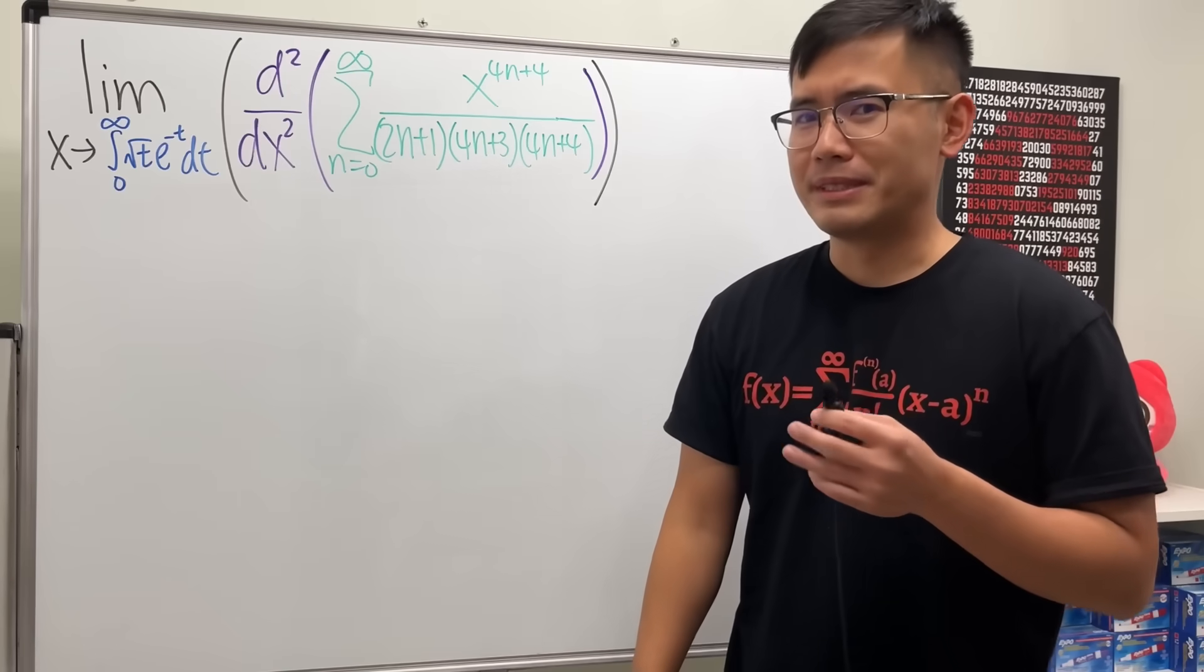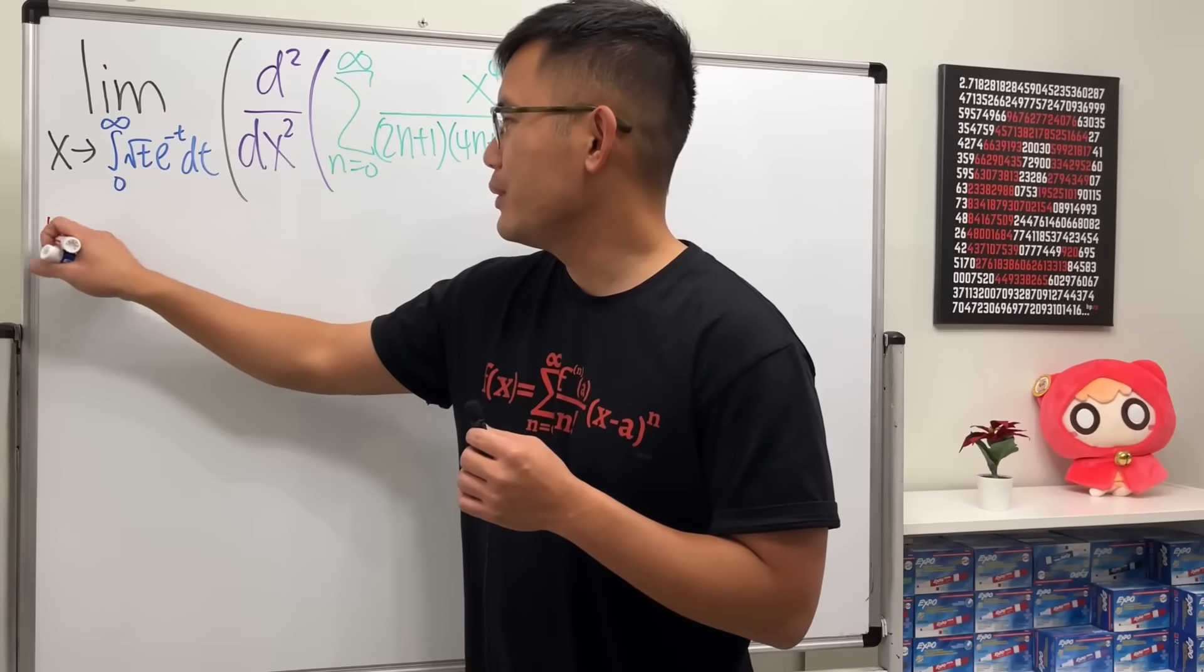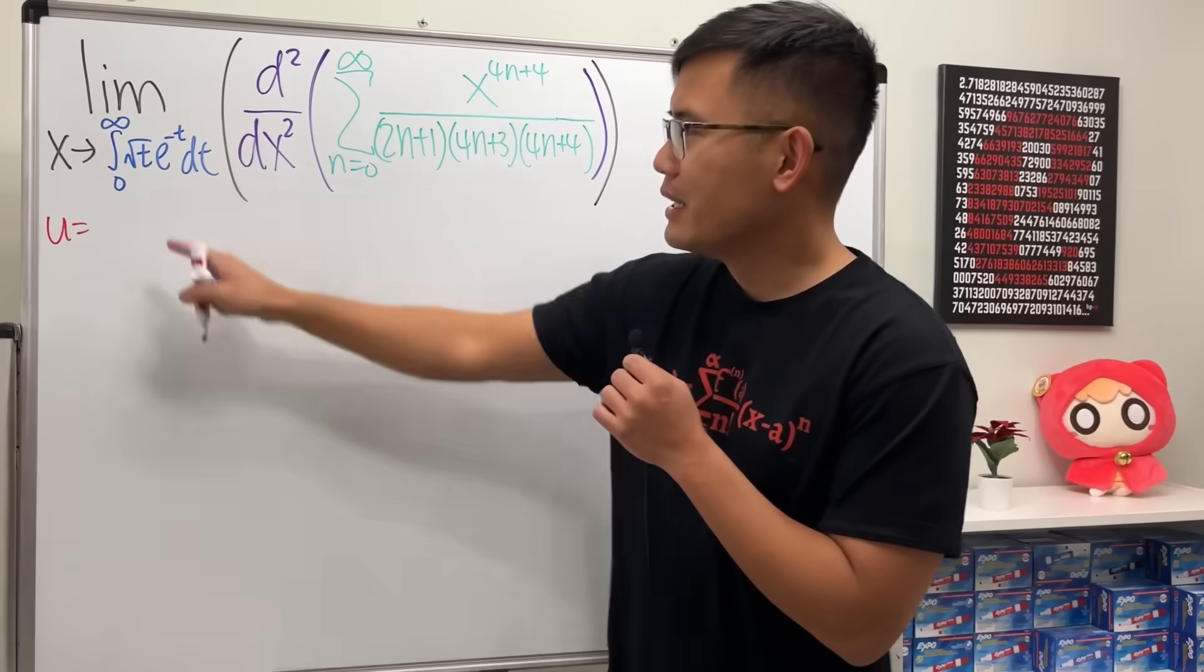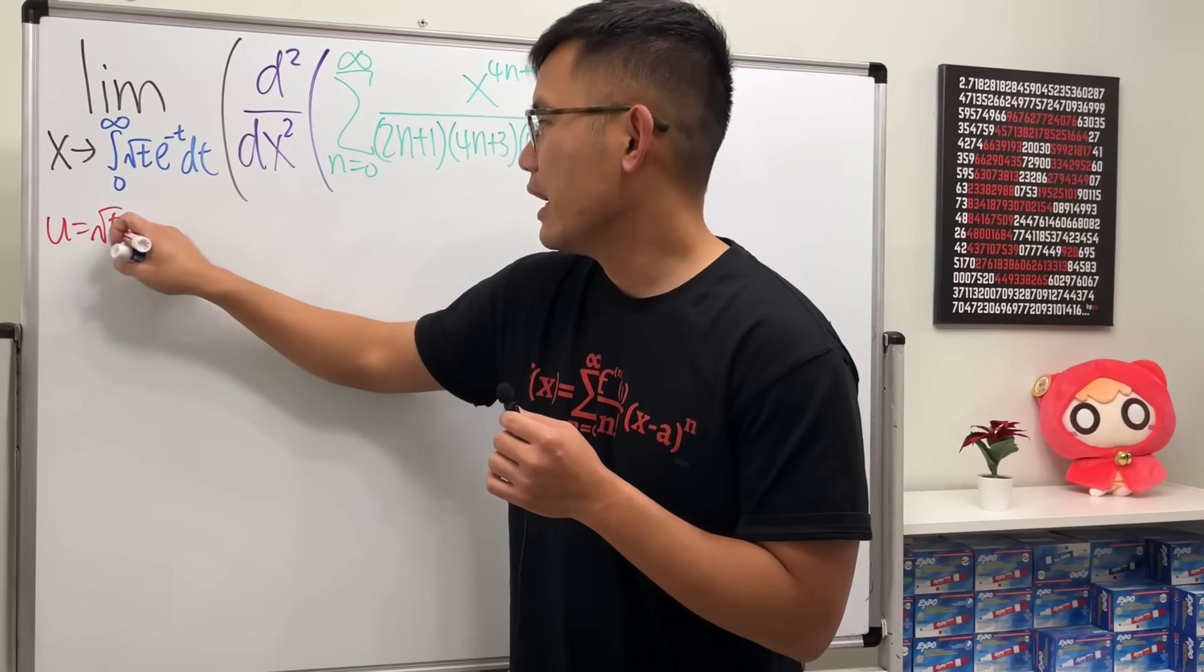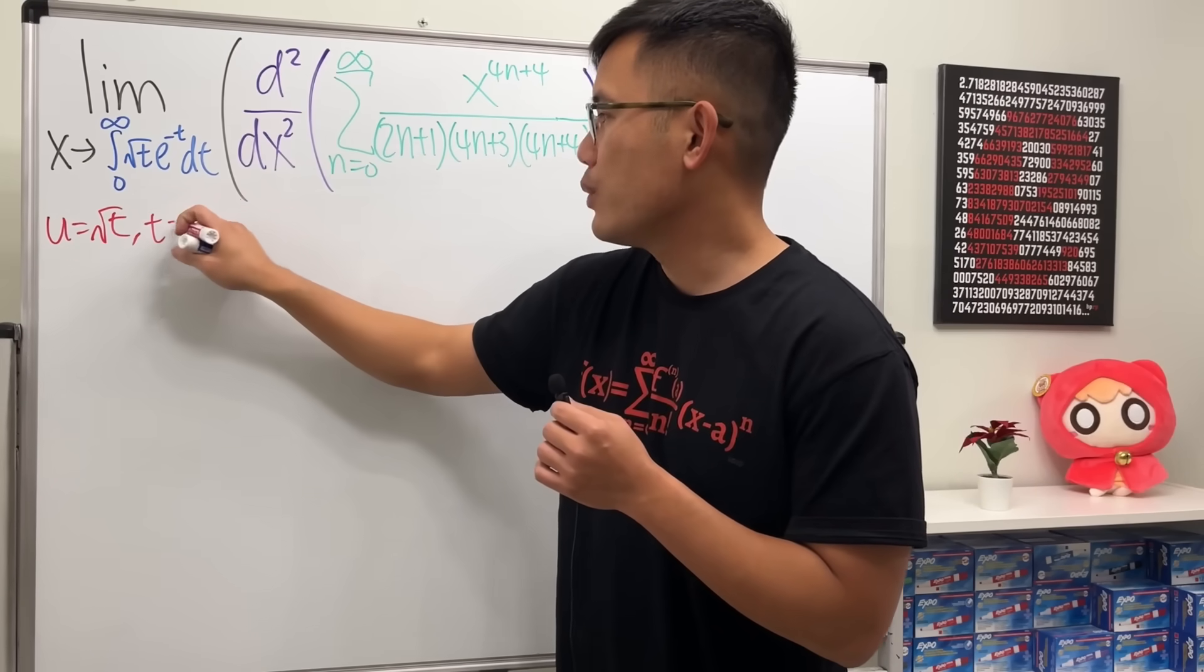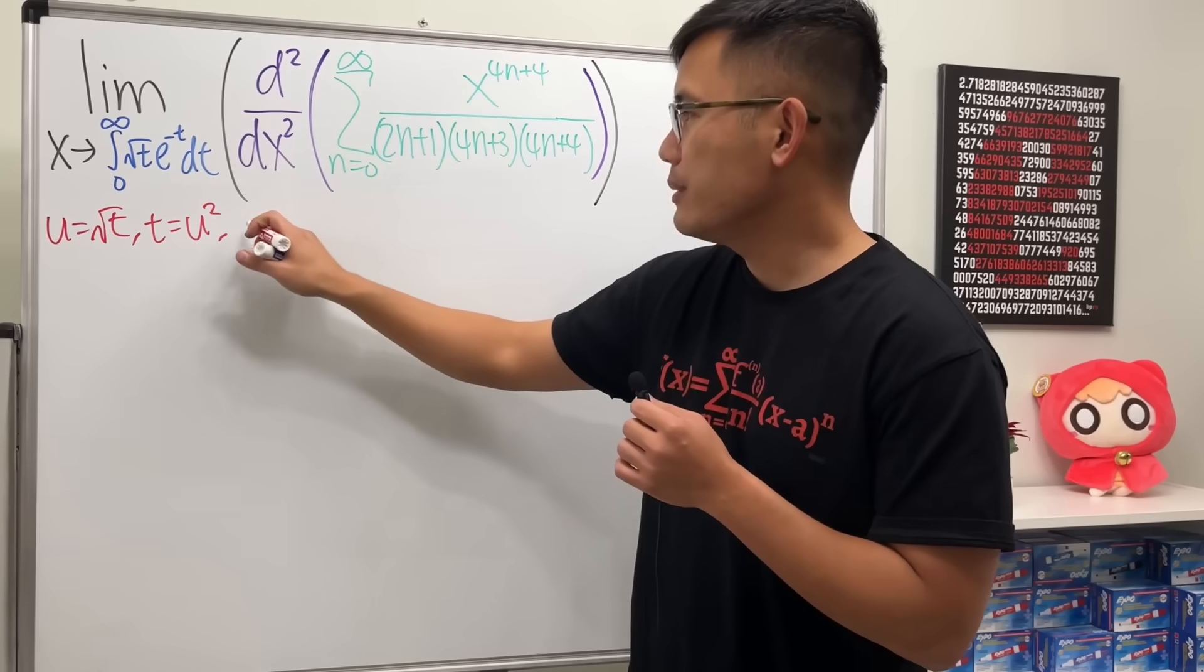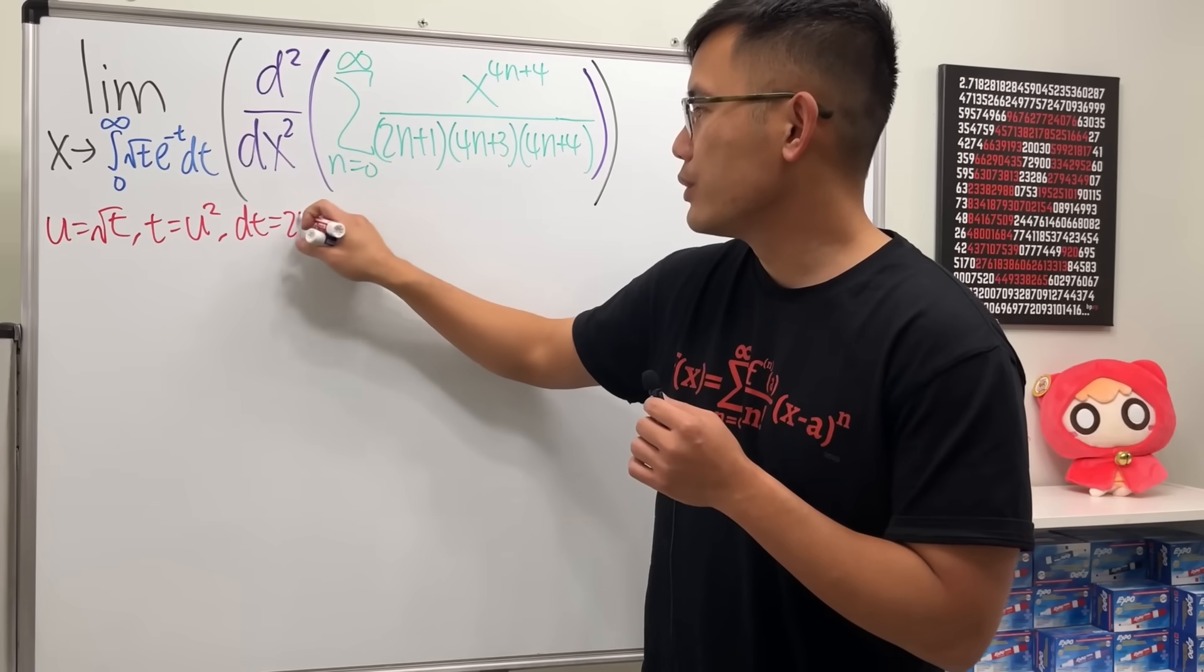Let's just go ahead and do a u-substitution and see what happens. Let's say u equals t... No, that doesn't do us anything, right? So try square root of t. And of course, square both sides, square root of t equals u squared. Then differentiating both sides, we get dt equals 2u du.